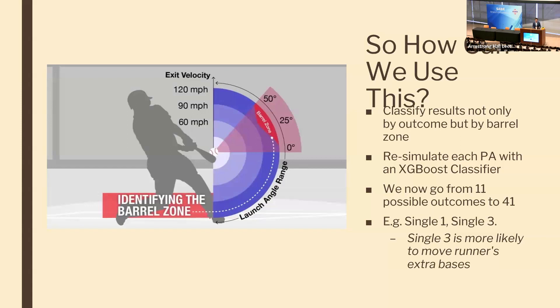A harder hit single can be labeled single-three. This matters when there's a runner on base — a single-one is less likely to move that runner over extra bases compared to a single-three. This makes the Markov chain bigger, but also produces more confident results since we know how hard the ball was hit.